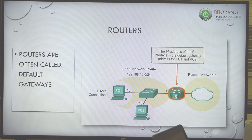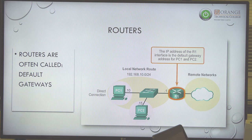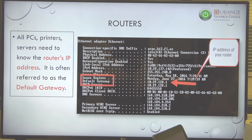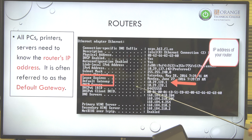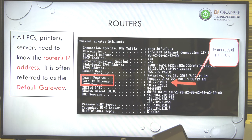Routers are often called default gateways. For whatever reason, the world of TCP/IP always had a tendency to call these gateways, while everybody else called them routers. When we talk about routers, the same word applies to 'default gateway.' Here's an example — if you do an ipconfig on your PC, you'll see there's an area for the default gateway with an IP address. The language of TCP/IP has always used the word gateway for the router.